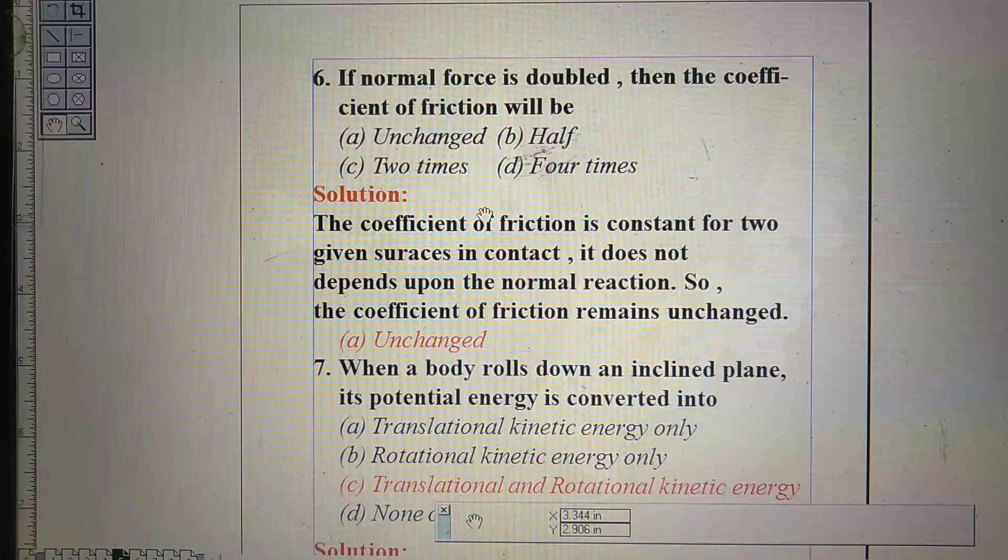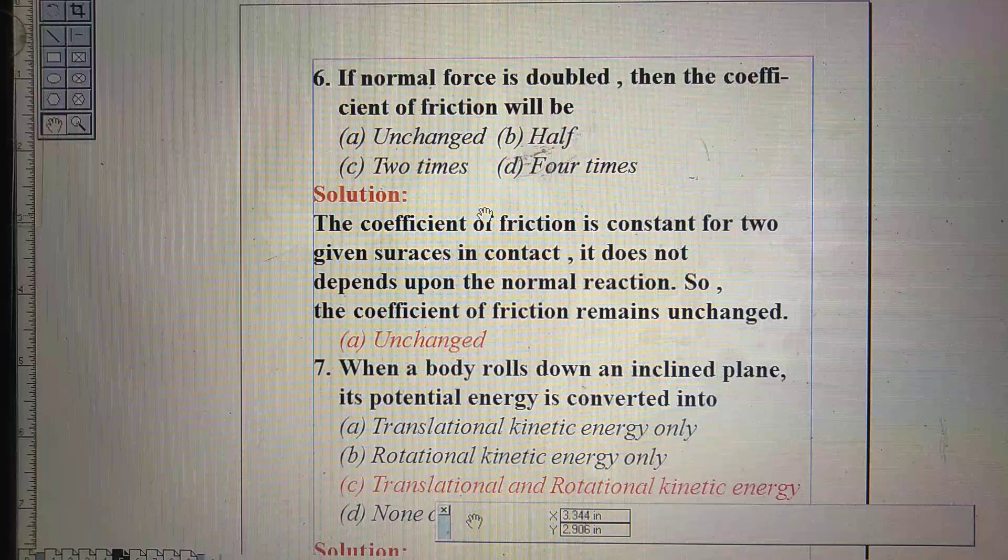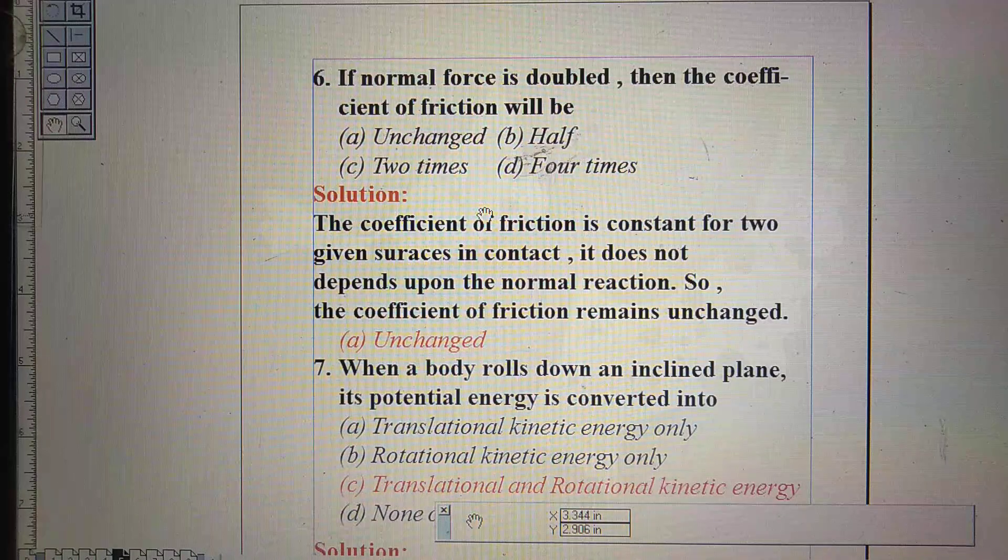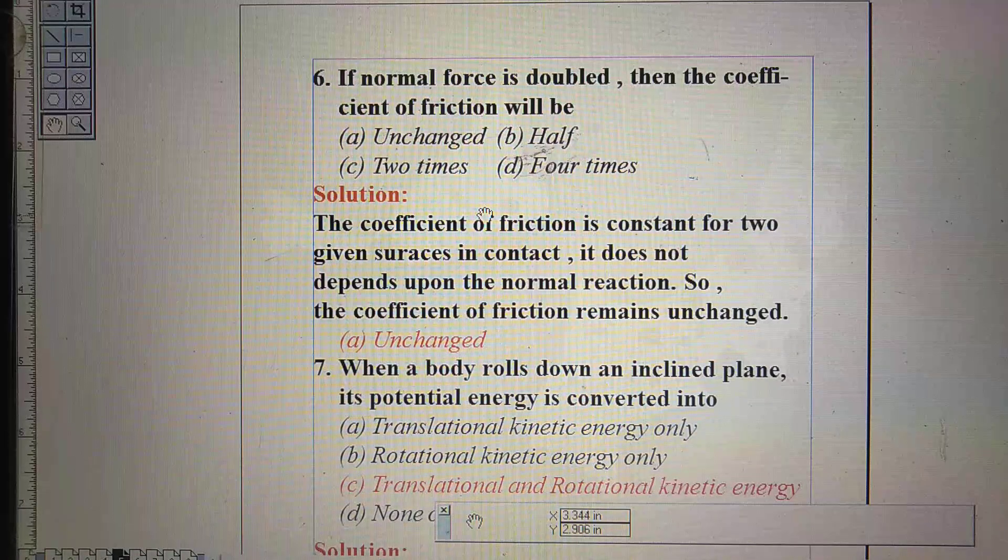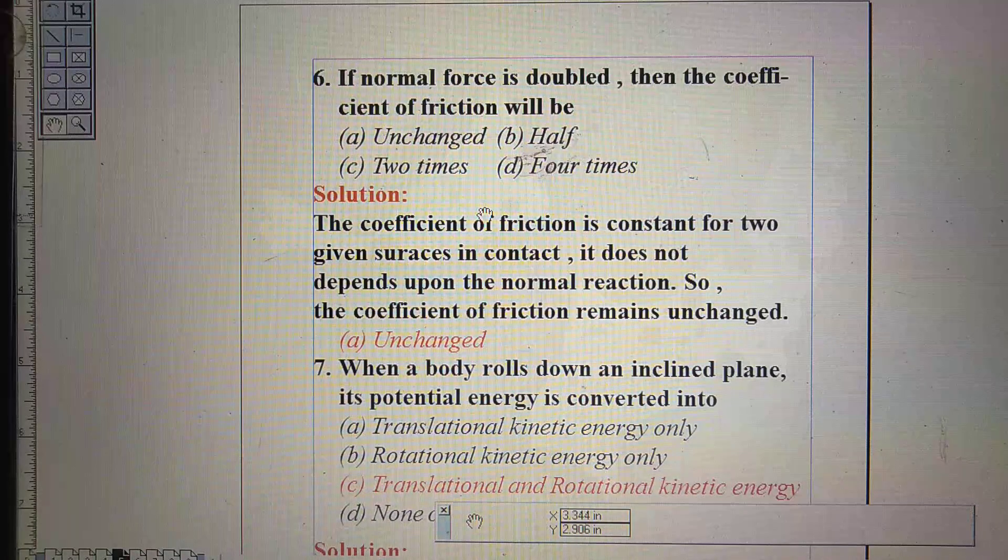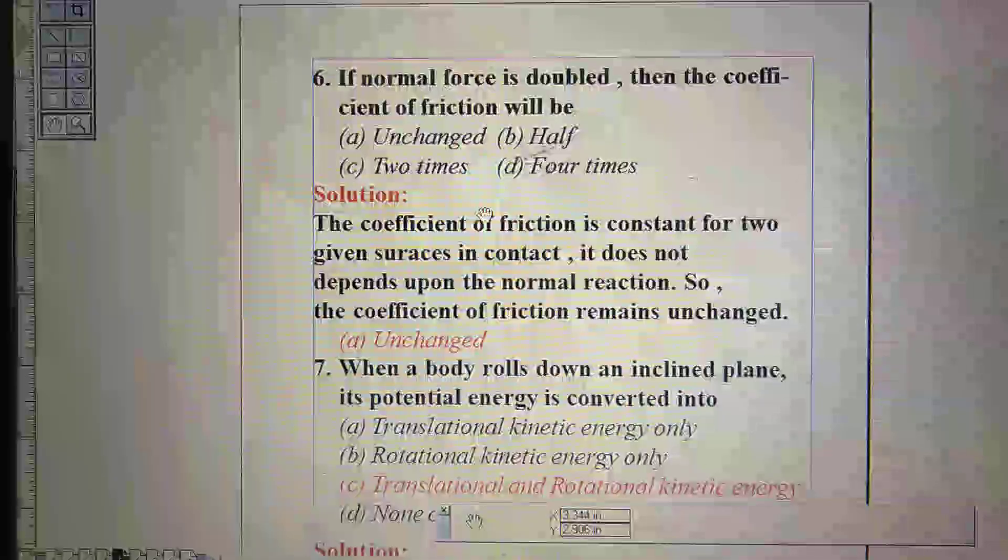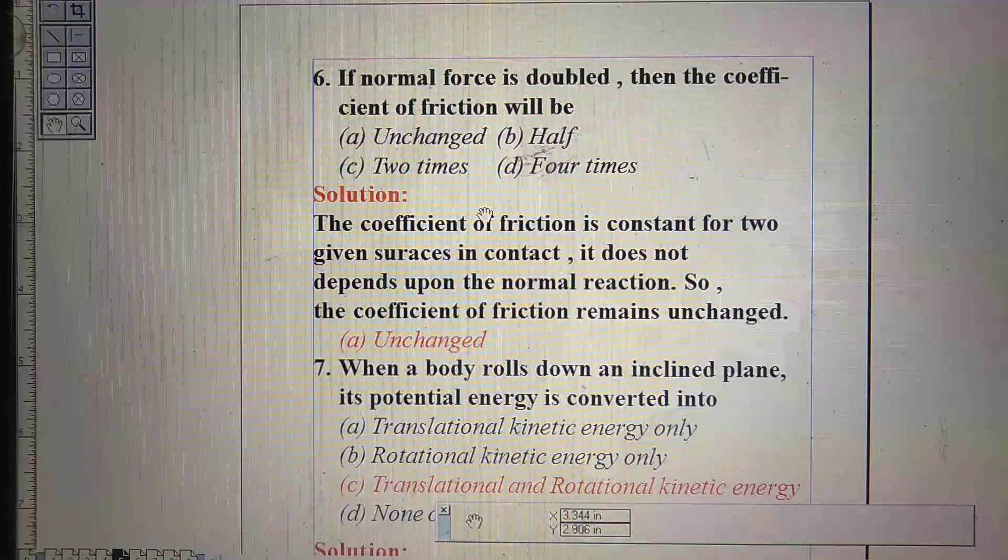First question: if normal force is doubled, then the coefficient of friction will be option A unchanged, option B half, option C two times, option D four times.